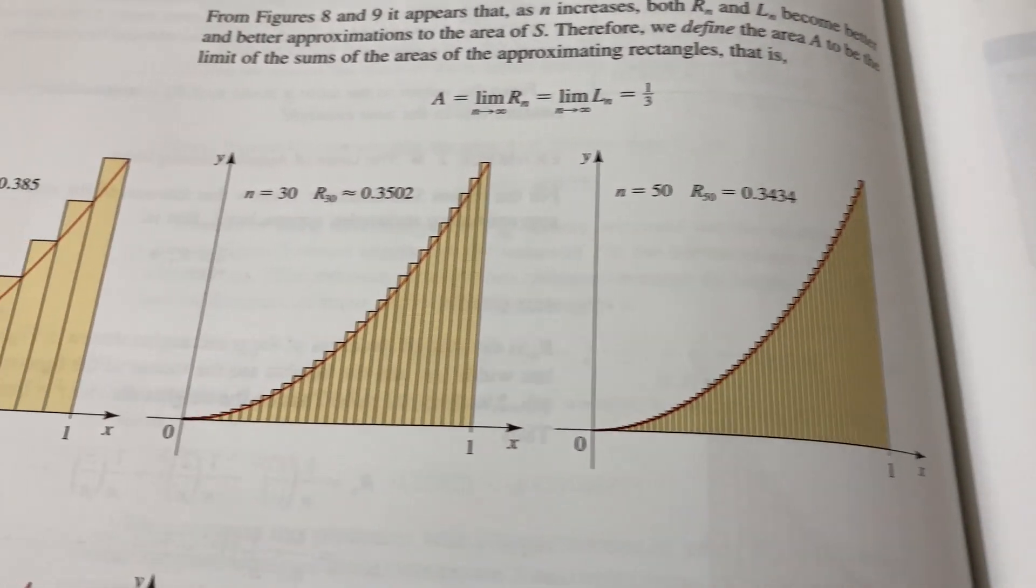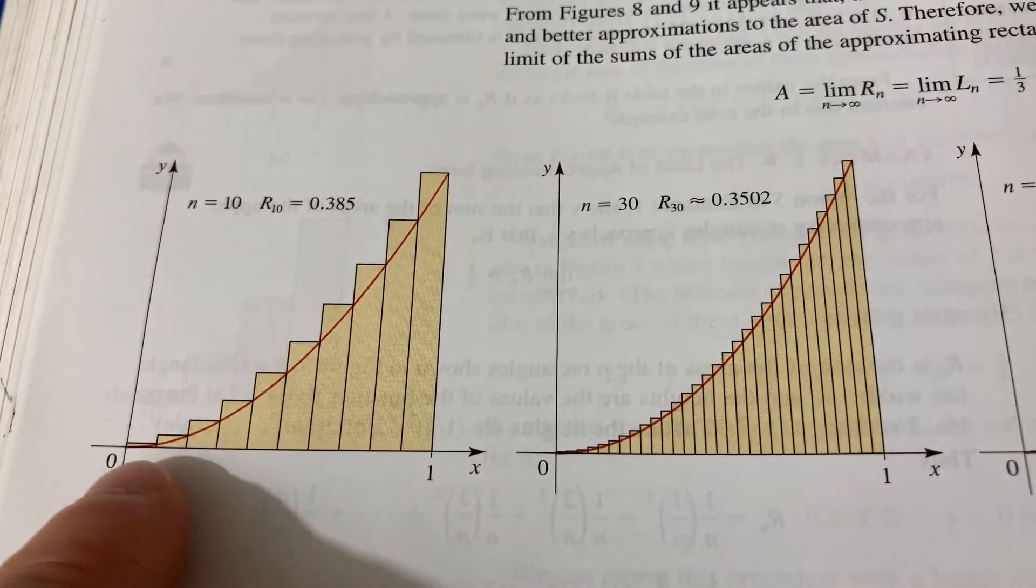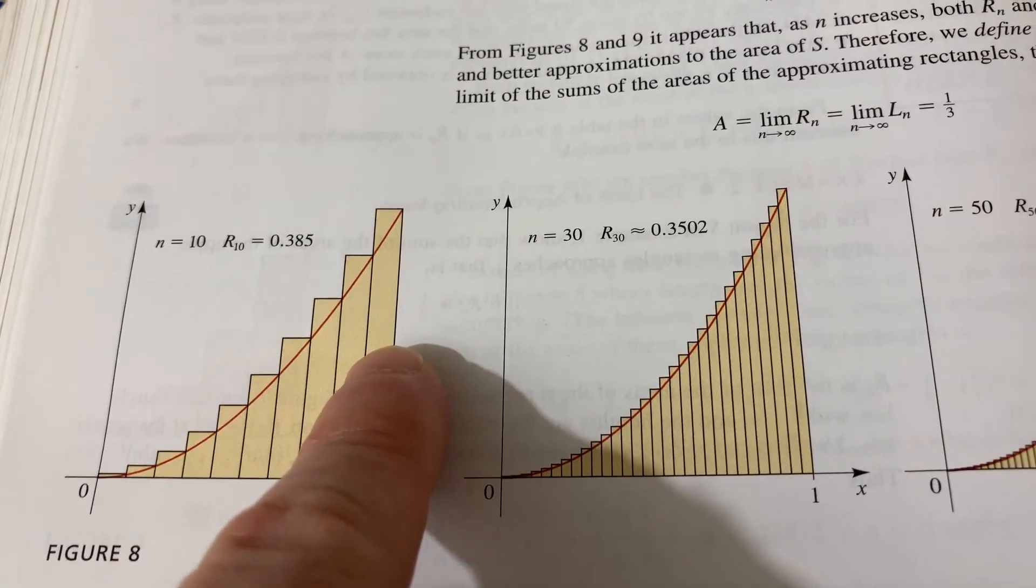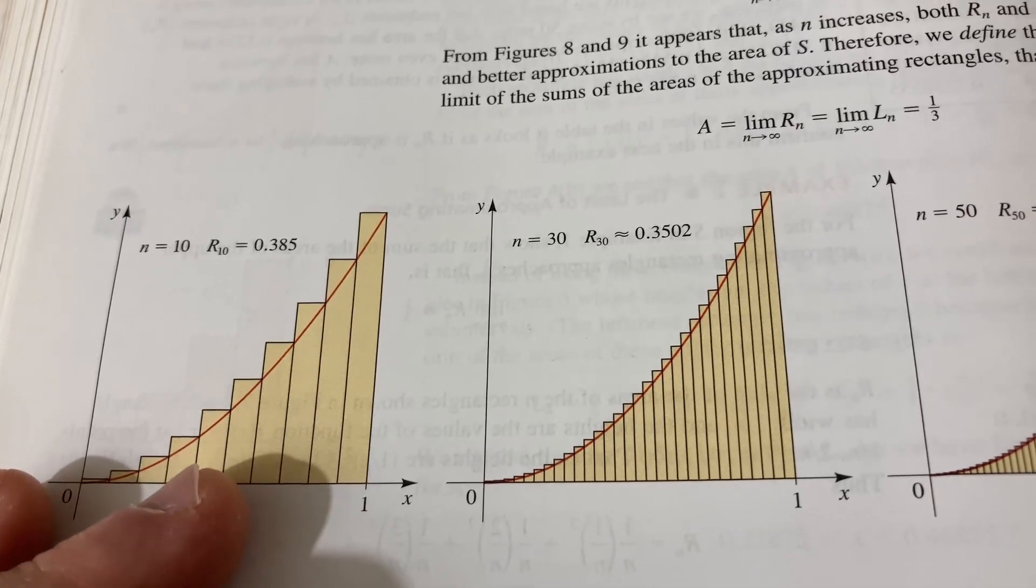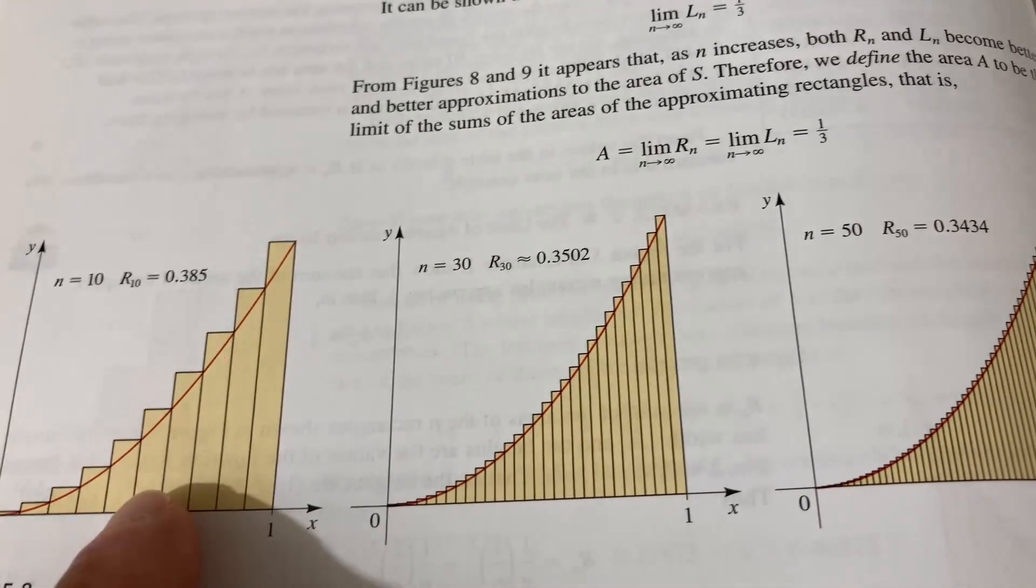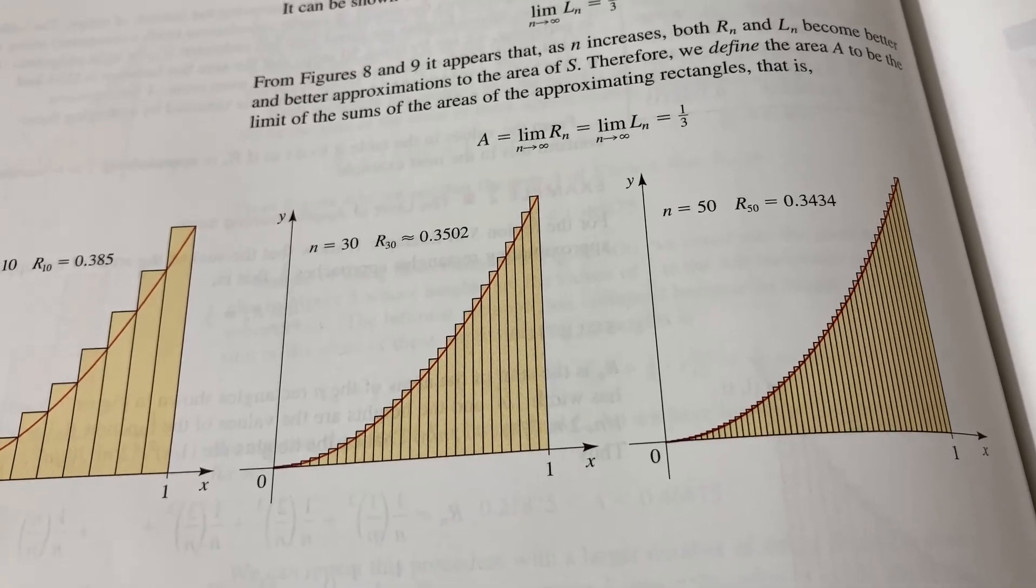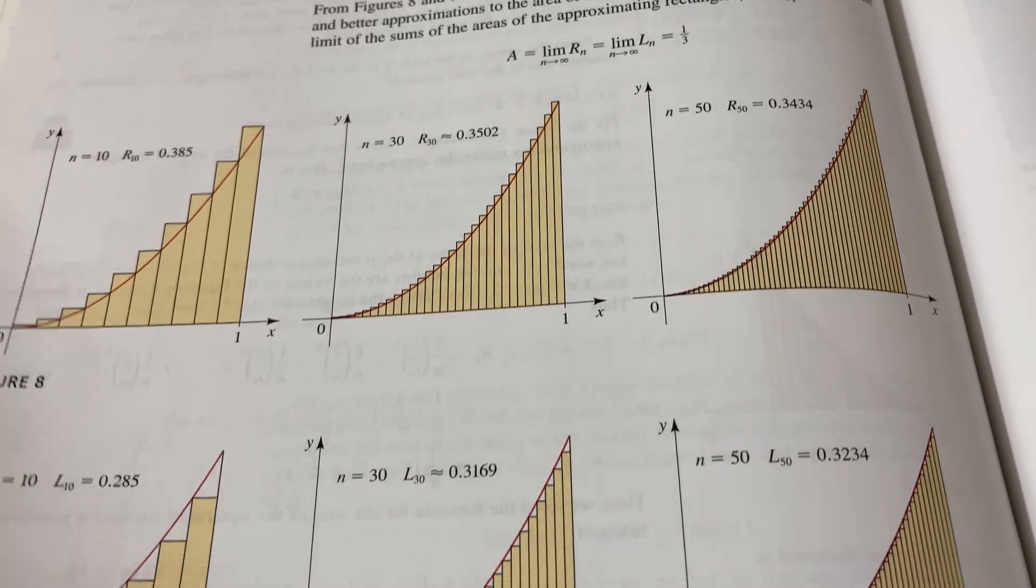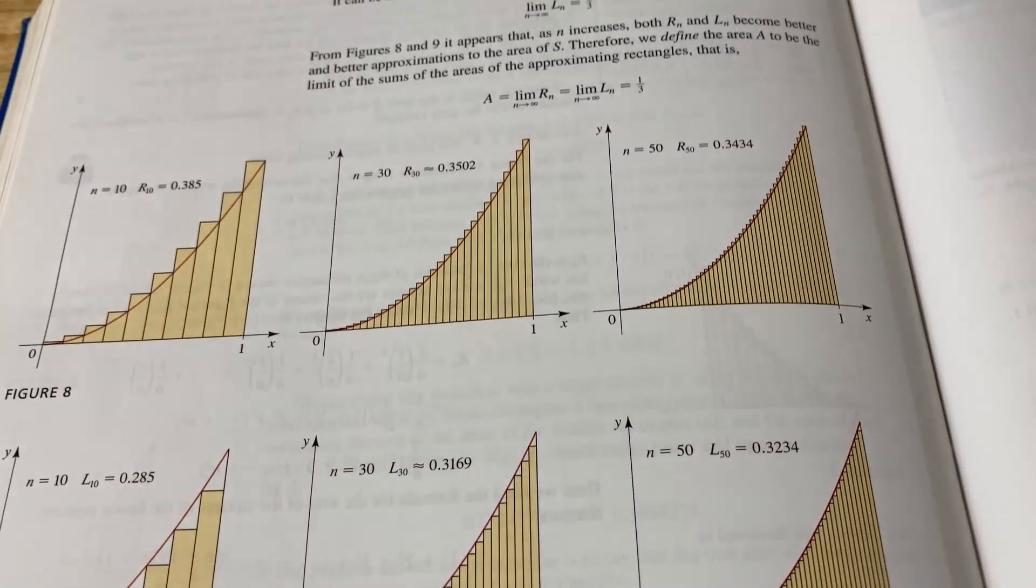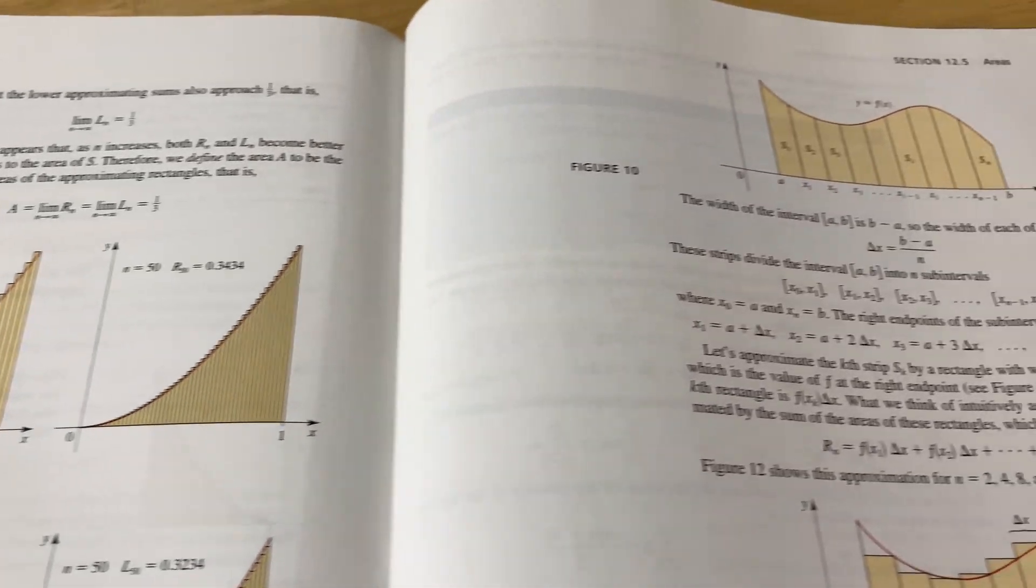12.5 talks about the area problem. This is something that basically leads to what's called definite integration. So you see here, we have a graph and we have rectangles. So this is an approximation to the area. If you add up the area of all of these rectangles, you'll get an approximation to the area under the curve of this graph. Obviously, the more rectangles you have, the better approximation as you can see here by the pictures. And if you let the number of rectangles approach infinity, you basically get the area under the curve. And we call that the definite integral of a function. So it's really a precursor to the ideas that you're going to see in a calculus class. And I think they do a great job in this book.